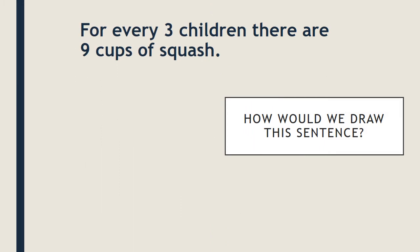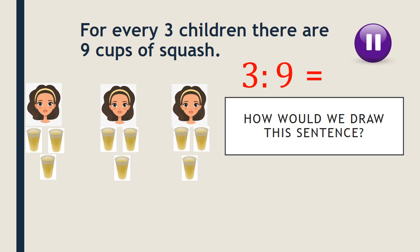For every three children there are nine cups of squash. I want you to think about how we could draw this sentence — maybe have a go at drawing it in your book. It might look like this: three children and nine cups of squash. If I share that out equally I can see how much each of them has. As a ratio that would be written as three to nine — three children, nine cups of squash.